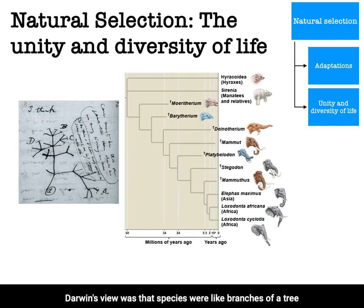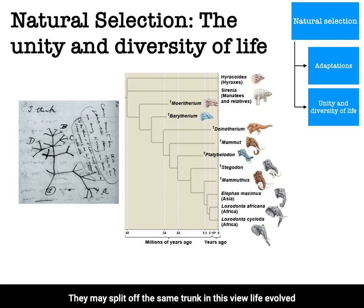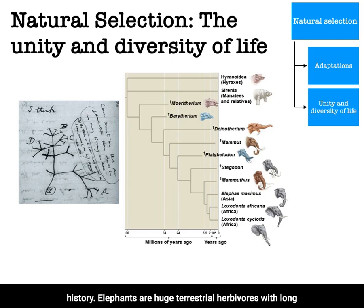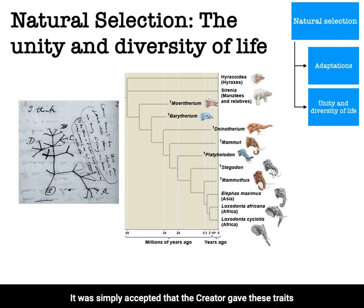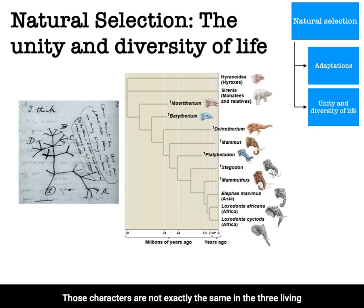Darwin's view was that species were like branches of a tree. The twigs are all different, though they may split off the same branch; the branches are all different, though they may split off the same limb; the limbs are all different, though they may split off the same trunk. In this view, life evolved from non-life, and we are all connected to a shared evolutionary history. Elephants are huge terrestrial herbivores with long trunks and big ears. In the pre-Darwinian view, it was accepted that the creator gave these traits independently. In Darwin's view, elephants share these characteristics because they inherited them from a common ancestor, and those characters differ slightly among the three living species because each adapted to local conditions.